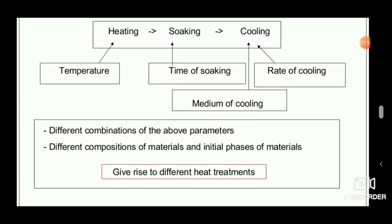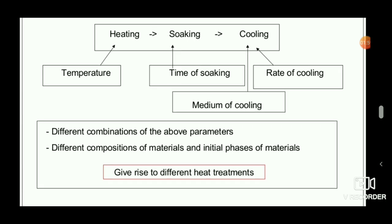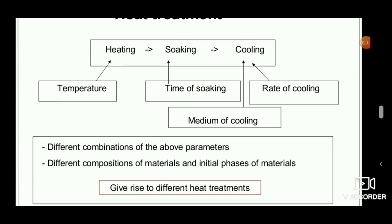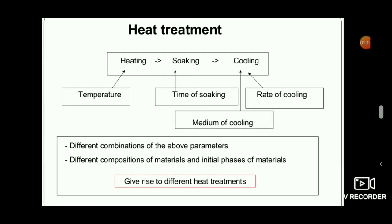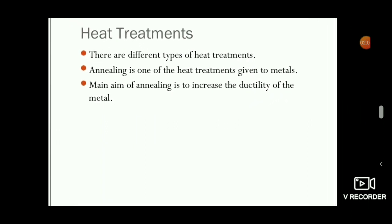There are different types of cooling media, such as oil cooling, water cooling, air cooling, and furnace cooling. By using different combinations of these parameters, different material compositions, and different initial phases, we can obtain different microstructures and different properties in the metal.